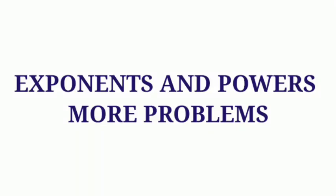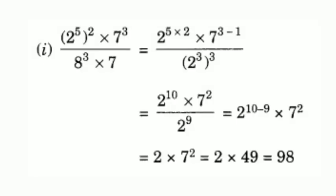Dear students, we are going to learn some important problems from exponents and powers, Class 7. Simplify: 2 raised to 5, all raised to 2, into 7 raised to 3, all divided by 8 raised to 3 into 7. Using laws of exponents, how do we simplify this question?